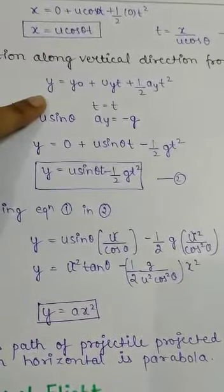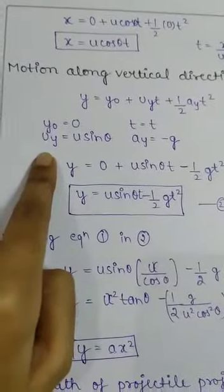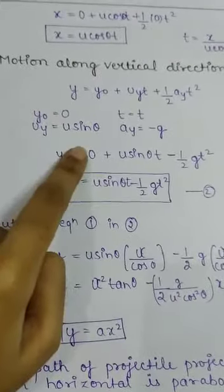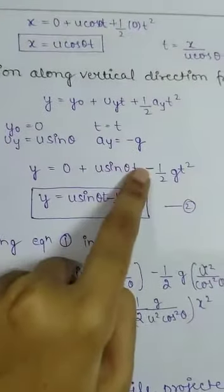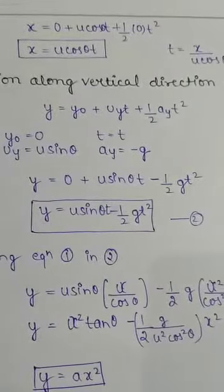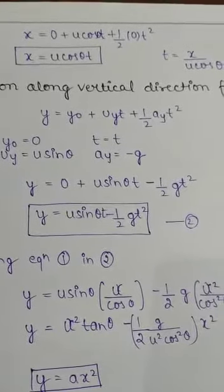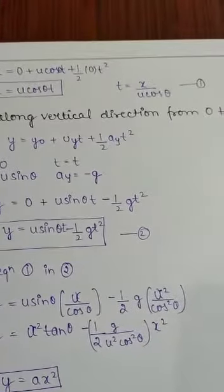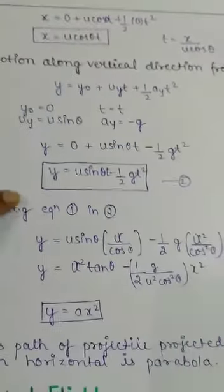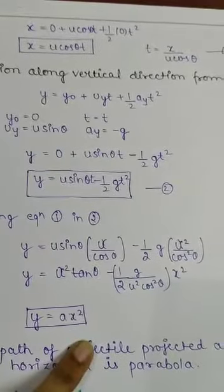Similarly for vertical motion: y is the vertical distance of object, y naught equals to 0, time is t, u_y is the vertical component of velocity which is u sin theta and a_y is minus g because we are going against the gravity. When we put these values, then we have y equals to u sin theta t minus half g t square. If we keep the value of t from equation 1 into equation 2, then y equals to a x square or quadratic equation.